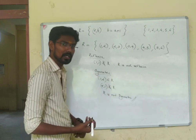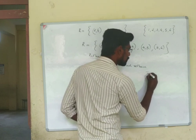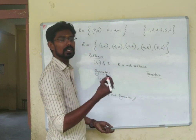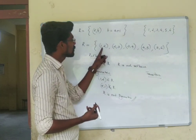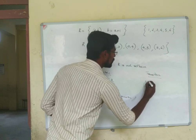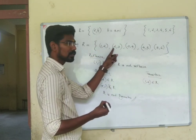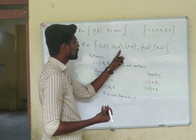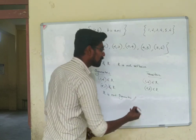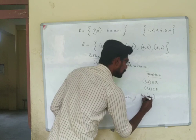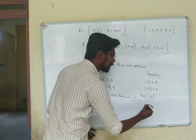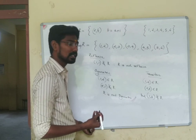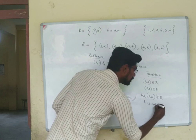For transitivity: (1,2) ∈ R and (2,3) ∈ R — but does (1,3) ∈ R? We need 3 = 1+1, which is false. So (1,3) is not in R. Therefore R is not transitive.